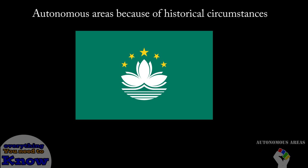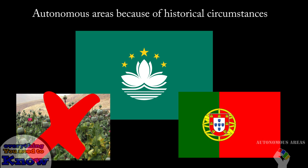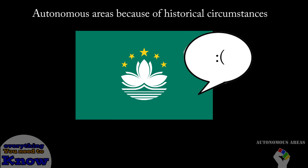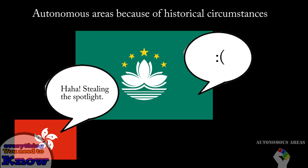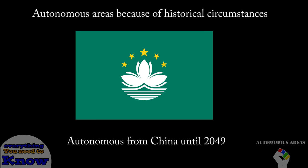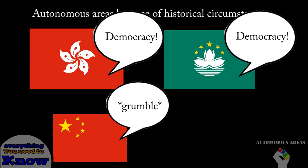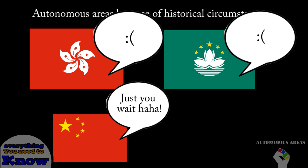Now Macau is a similar story, except this time it's not because of opium and it's dealing with the Portuguese. Its current status is very similar to Hong Kong's — it is guaranteed an autonomous status until 2049. Also the people of the two city-states enjoy a somewhat democratic political system comparatively to their communist overlords, which will probably be abolished after their autonomous status is revoked.